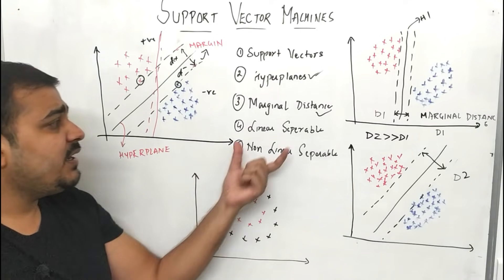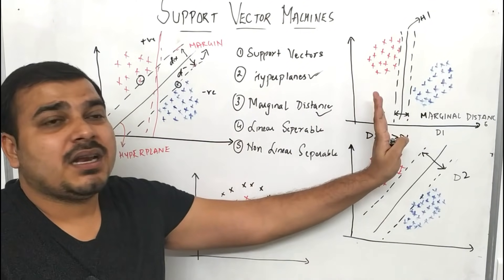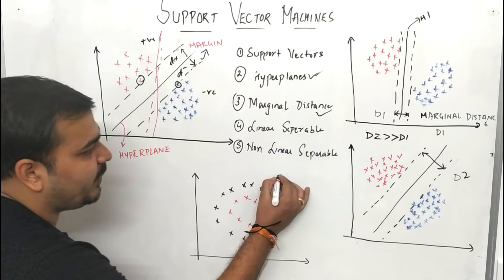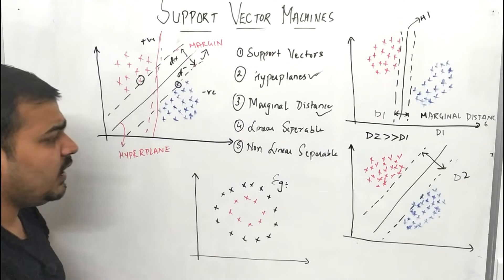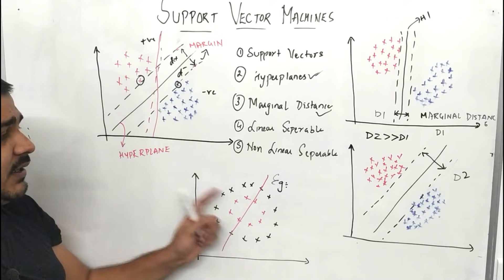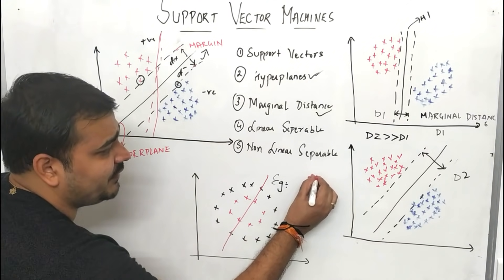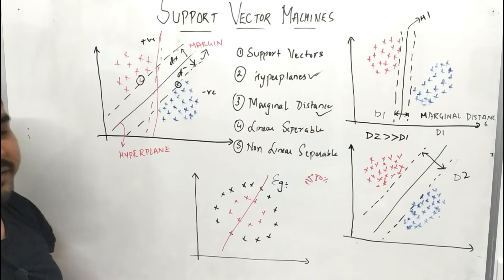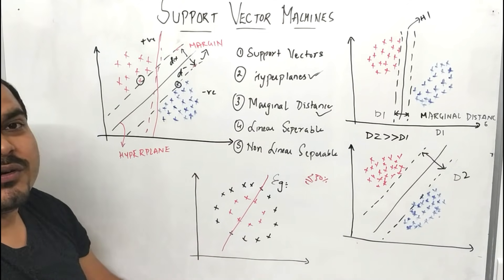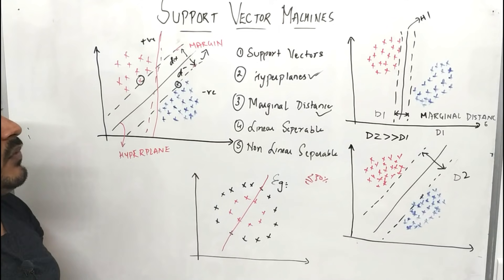We also discussed linearly separable and non-linearly separable points. Linearly separable means we can easily separate the points by drawing a straight line. Non-linearly separable means — as shown in this example — we cannot draw a straight line to divide the points. If we try, our accuracy will be less than or equal to 50 percent because the points are intermixed. We'll also try to understand how to solve this particular problem.